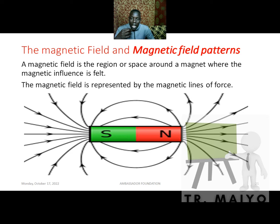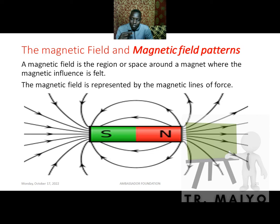First of all, let's define a magnetic field. A magnetic field has a very simple definition: it is the region or space around a magnet where the magnetic influence is felt. Magnetic influence includes attraction and repulsion. So that region around a magnet where attraction and repulsion is felt is what we call the magnetic field.